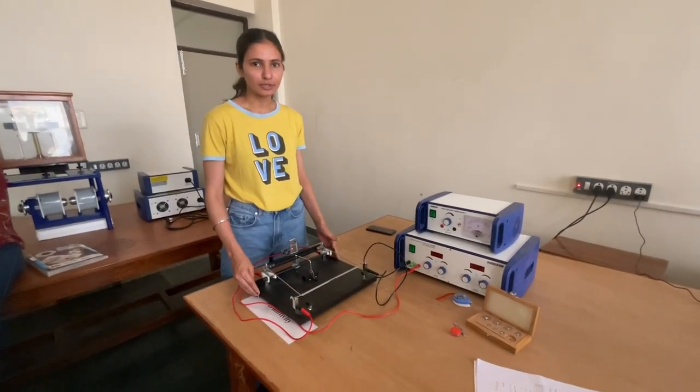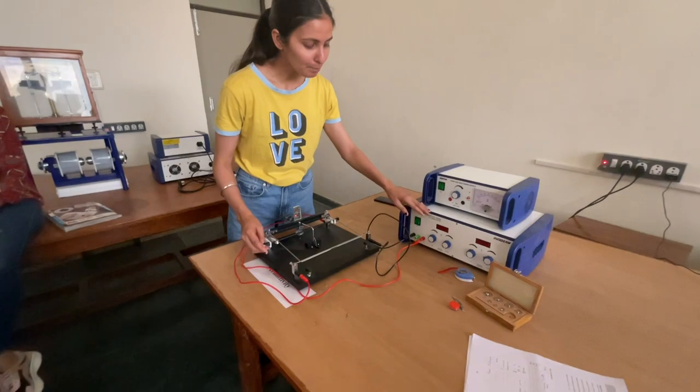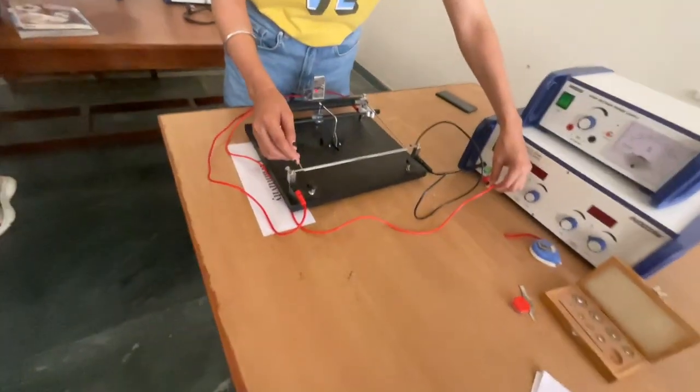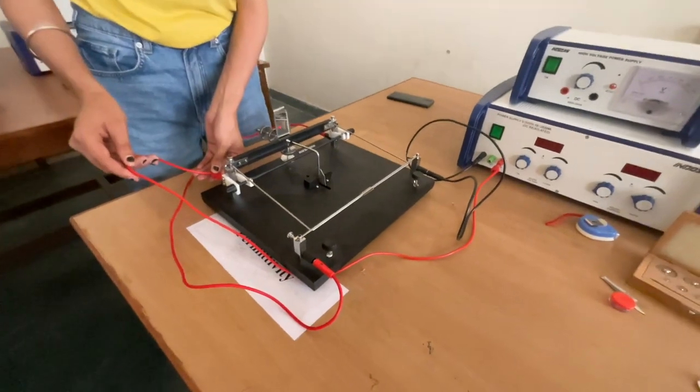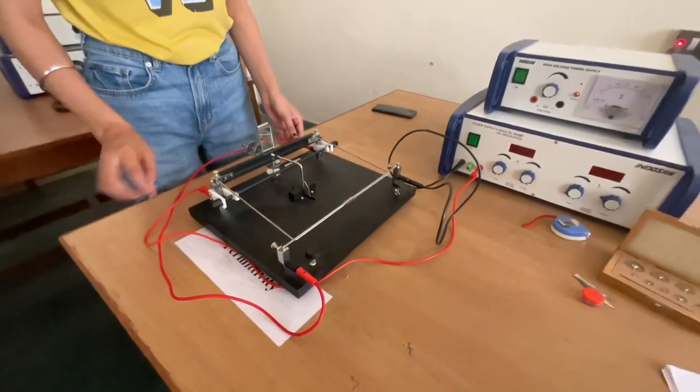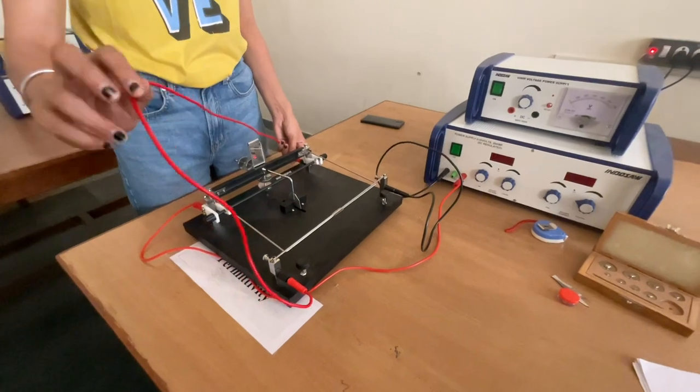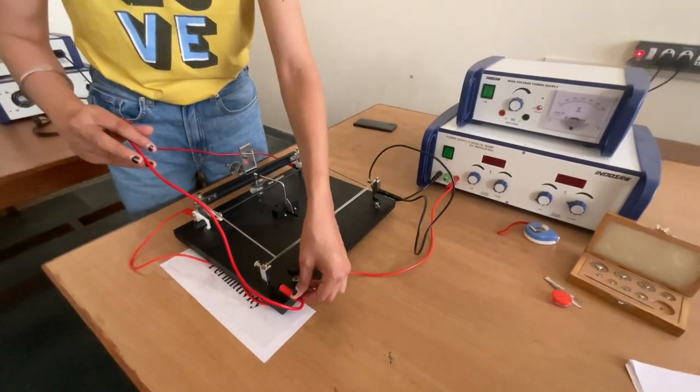Now, we see the connection of this setup. First of all, we will connect the positive terminal to the U-shaped rod. Then, the second terminal we will connect from the U-shaped rod to the short rod.